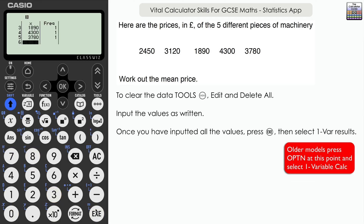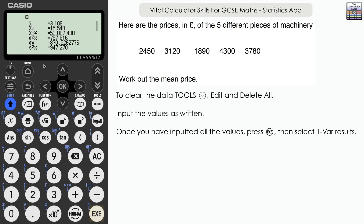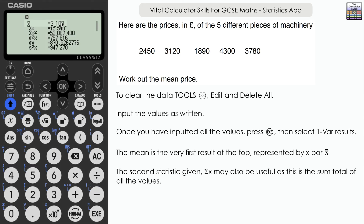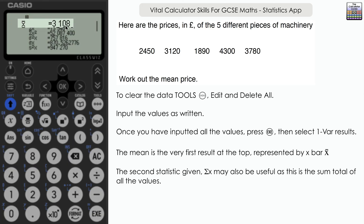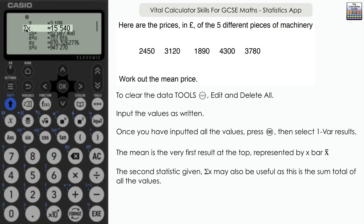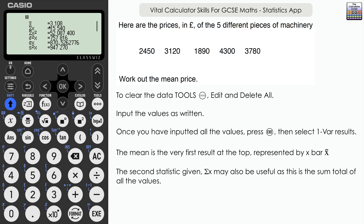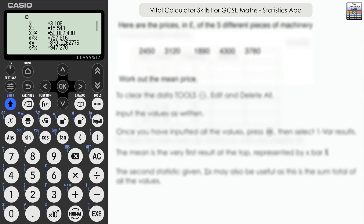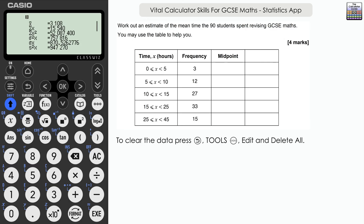Once all five are inputted and you're prompted for a sixth, just press execute. Then select one var results. What we're looking for is the top value — X-bar, X with a line across the top — that is the mean. The mean is £3,108. The second value, sum of X, is the total of all values added together; dividing that by five also gives 3,108.